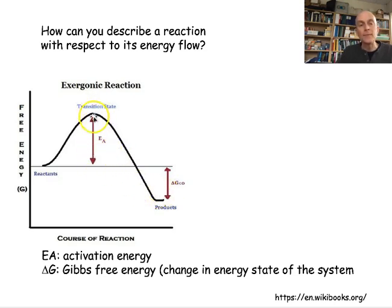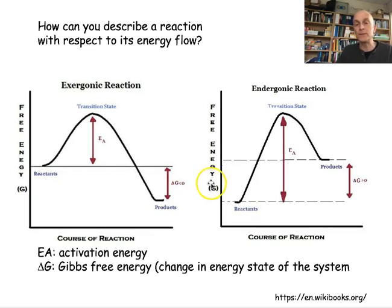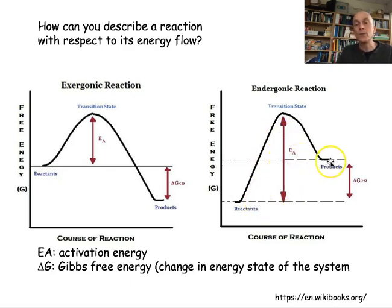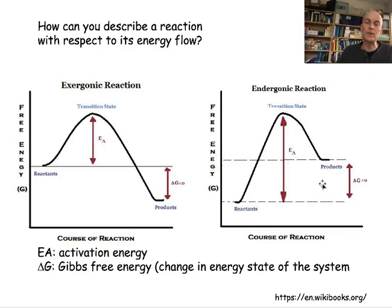An endergonic reaction is the opposite: reactants have a lower energy content than the products, so energy must be put in — not only for activation energy, but also with respect to the total Gibbs free energy change, where delta G is greater than zero. These thermodynamic principles are what guide water movement and water potential as well. In general, free energy represents the potential for performing work, described by the value for delta G.